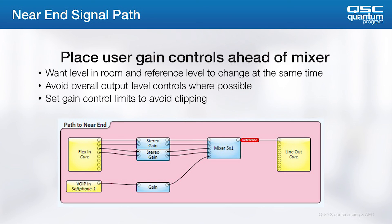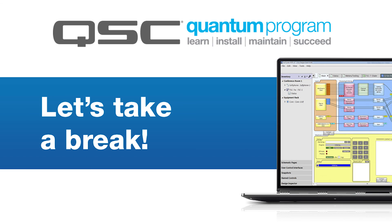In addition, this is great for AEC systems. The red tag in this diagram represents the reference signal. If I increase the level of the softphone receive in the room, I also increase the level to the AEC reference by the same amount. Placing controls in this manner reduces the amount of reconvergence required by the AEC algorithm as compared to changing only the level in the room. Alright, let's take a quick break right here and come back whenever you're ready.